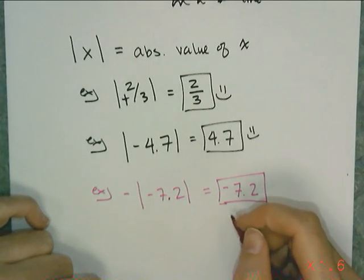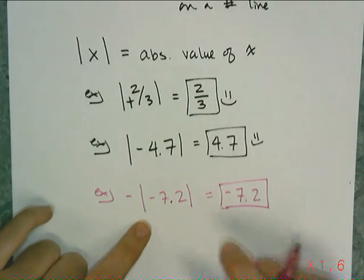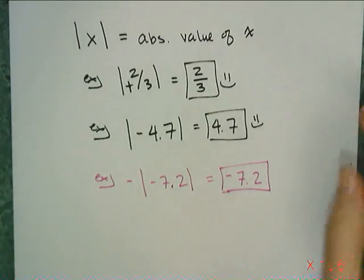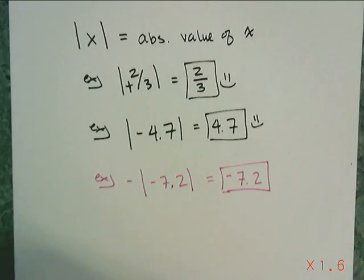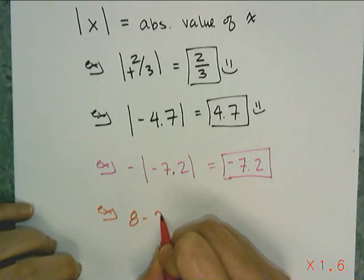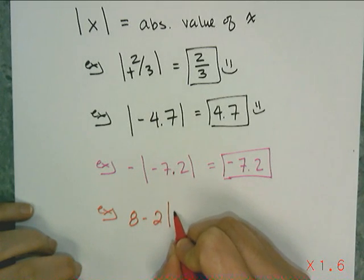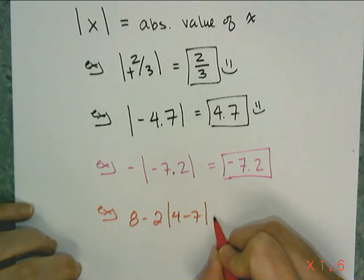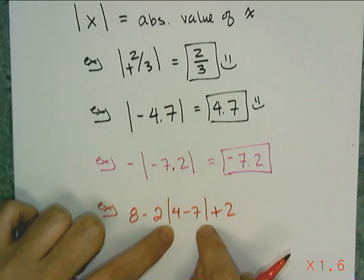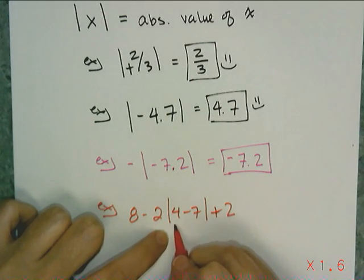Now the one thing we have to remember is that these absolute values work like grouping symbols. And so when I encounter them in a bigger problem like this, 8 minus 2 absolute value 4 minus 7 plus 2, I have to treat these absolute values like a grouping symbol, so I have to take care of them first.